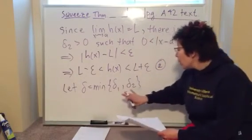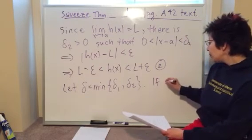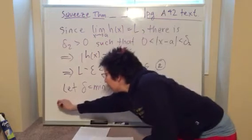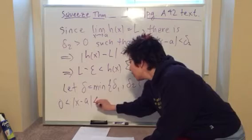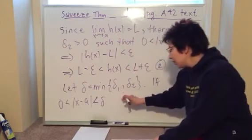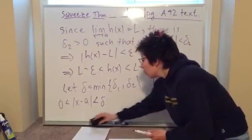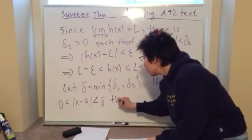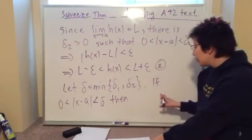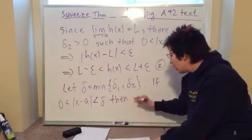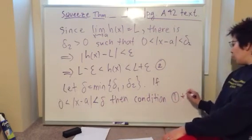So, if we let delta equal the minimum of this, then we can say, if zero is the absolute value of x minus A, which is less than delta, then, and you know, I feel like maybe we'll just use the word then. It doesn't matter, you wouldn't lose marks or anything if you used an if-then symbol properly, it's just kind of making a discussion. So, then,